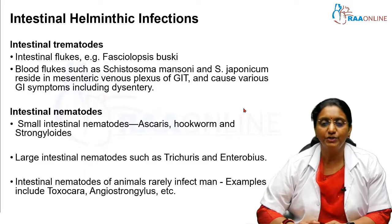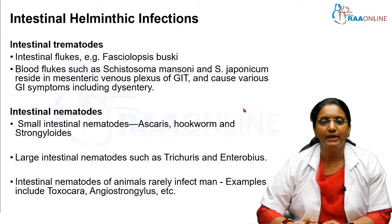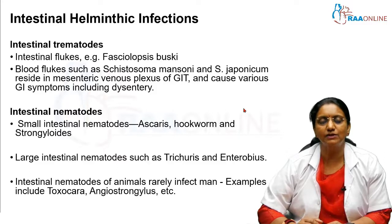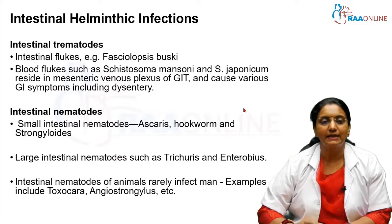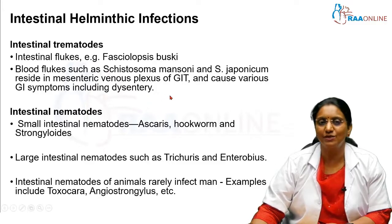Apart from intestinal flukes, there are blood flukes. Schistosoma mansoni and Schistosoma japonicum are present in the mesenteric plexus or veins of the gastrointestinal tract, and so they can cause a lot of GI symptoms including dysentery — that is why they are included here.